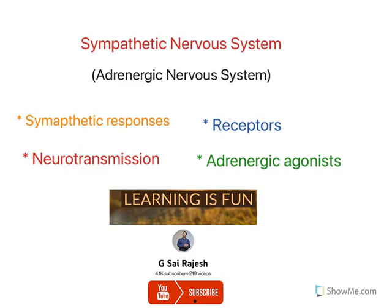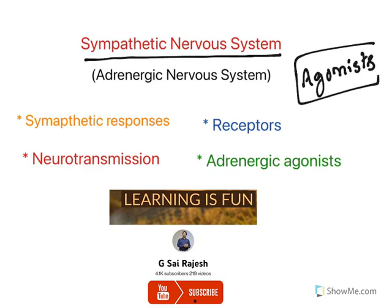Welcome to this video on the sympathetic nervous system. I'm going to explain about adrenergic agonists, which are also known as sympathomimetics. The word 'mimetic' is derived from mimicry — these are drugs which imitate sympathetic nervous system neurotransmitter actions, and are therefore called sympathomimetics. In this video I'll cover sympathetic responses, neurotransmission, receptors, and adrenergic agonists.